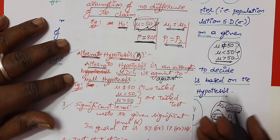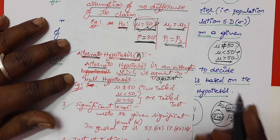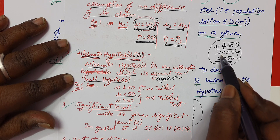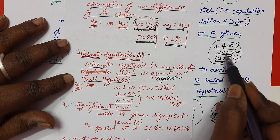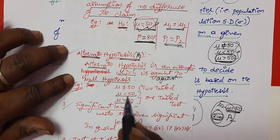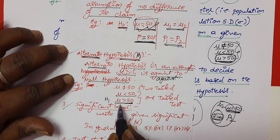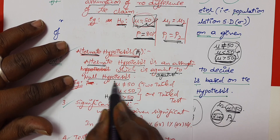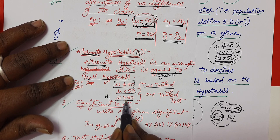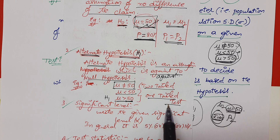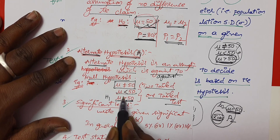If the problem statement says the population mean mu value is 50, the null hypothesis H0 is mu equals 50, and the alternate hypothesis H1 can be greater than, less than, or not equal to. If you find not equal to, it is a two-tailed test. If you find greater than or less than, it is a one-tailed test. We will find the statistical table values for two tails or one tail accordingly.